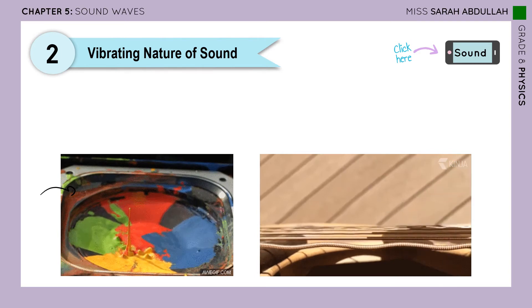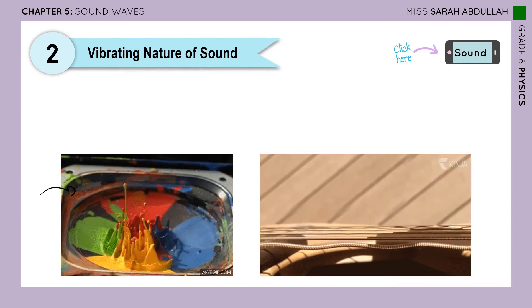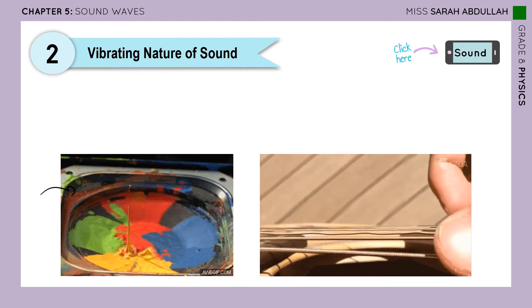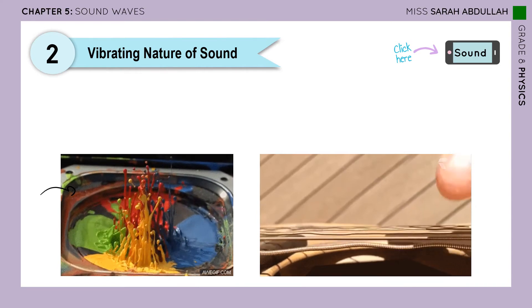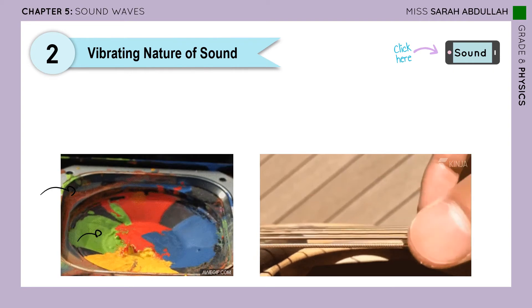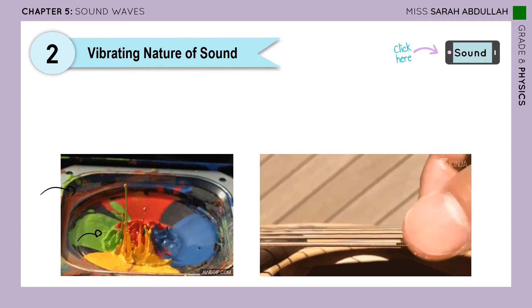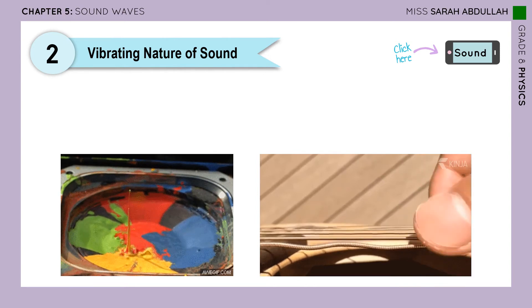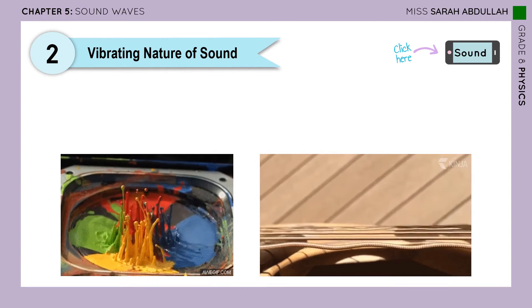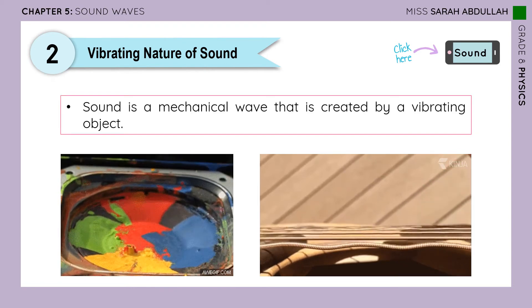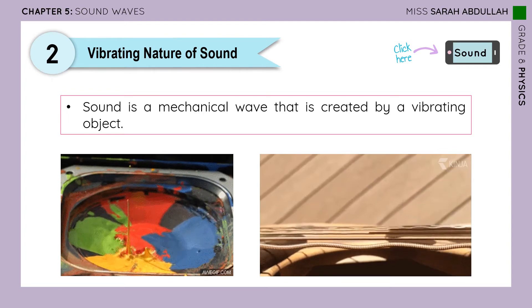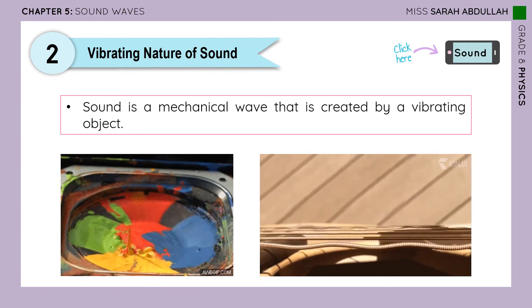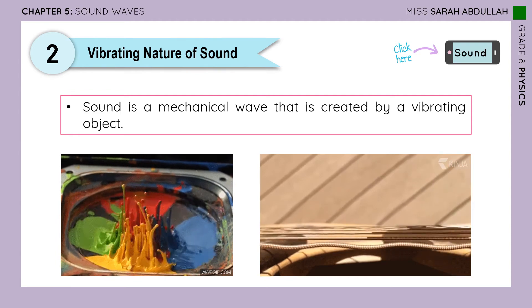In this other picture, music is being played on a speaker and paint has been put on the membrane so you can see the effect. You can see that the membrane is vibrating — moving up and down — and so is the paint. This vibration is the reason why you are able to hear the music from the speaker. So sound is a mechanical wave, created by a vibrating object; any vibrating object can create a sound wave.